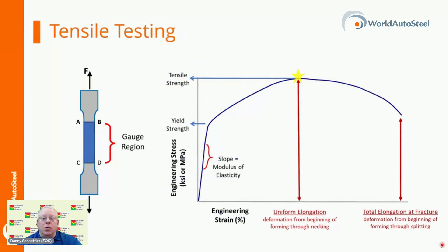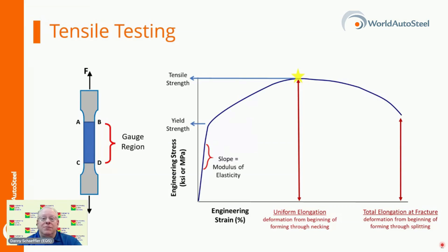Tensile testing is one of the most basic formability characterization methods. Results from tensile testing are a key input into metal forming simulations, but if the right information isn't included, the simulation will not accurately reflect material behavior. Metal forming simulation is particularly beneficial on value-added parts made from advanced high-strength steels, since accurate simulations allow for optimal processing with minimal recuts, at least when the right information is included as inputs.